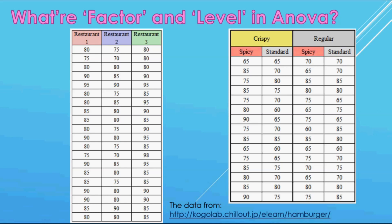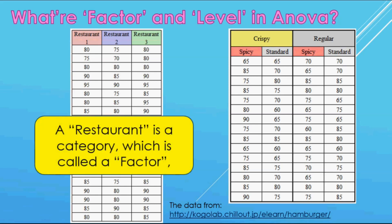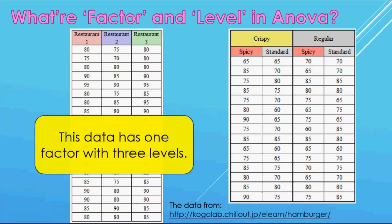See the left-side table. It has three data groups. This data is supposed to be the scores of three different restaurants' dishes reviewed by 60 people. A restaurant is a category, which is called a factor. And the one dish in each restaurant is called a level in ANOVA. So this data has one factor with three levels.